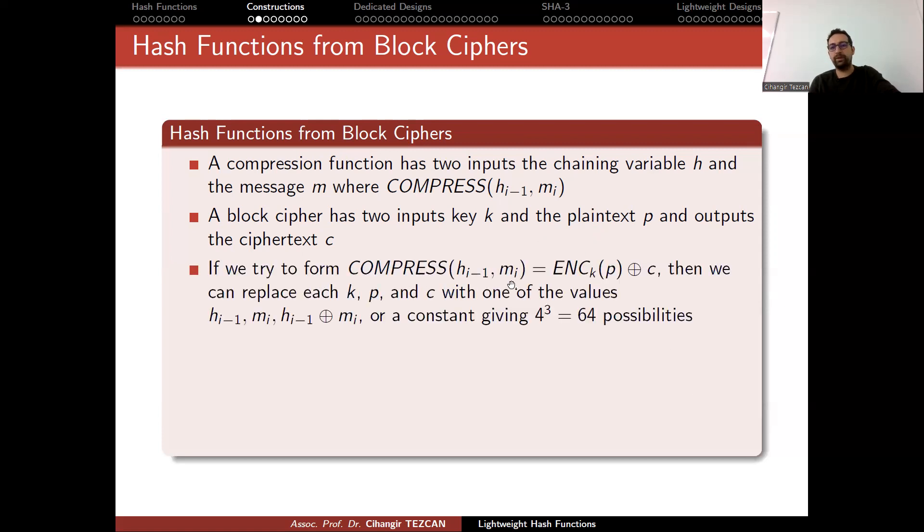So if you try to form compress equals the encryption of the plaintext block with the secret key, XOR with the ciphertext, then we can replace k, p and c with one of the values like h_{i-1}, m_i and so on. And this way you can actually create many possibilities. For instance, instead of this value, you can write your secret key and the plaintext, or you can write plaintext and the secret key and so on and so forth. So you can modify all of these.